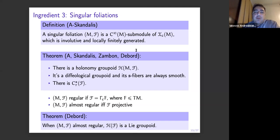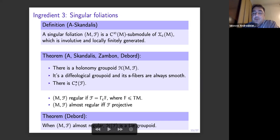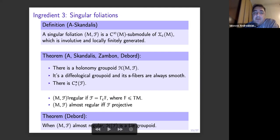A singular foliation is a C-infinity-M module of vector fields which is involutive and locally finitely generated. And then we were able to prove that there is always a holonomy groupoid — it's a groupoid in an algebraic sense. Its topology is usually very difficult, very bad — it's a diffeological groupoid, whatever that means. But Claire Debord was able to prove that its fibers are always smooth. And we were able to prove that there is always a C*-algebra — there is a reduced one and also a full C*-algebra, but we're going to be using the reduced one.